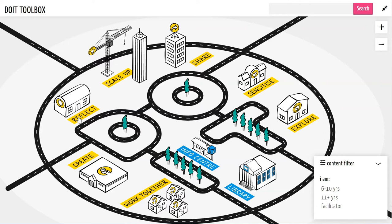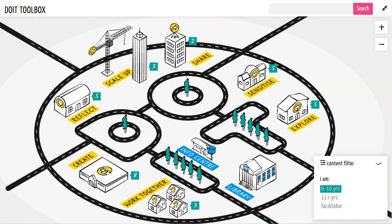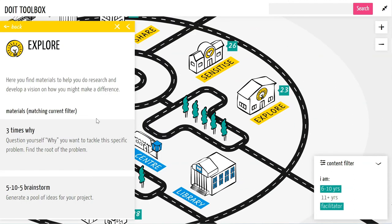So let's try and find a tool. Using the filter function down here, I want to see all the tools that are aimed towards ages 6 to 10. Notice these numbers popping up next to the shops — this is an indicator of the number of tools you can find in each phase for your current view. Let's try and see what happens if I also click facilitator. See how it changes? Now I want to find a tool in the explore phase.